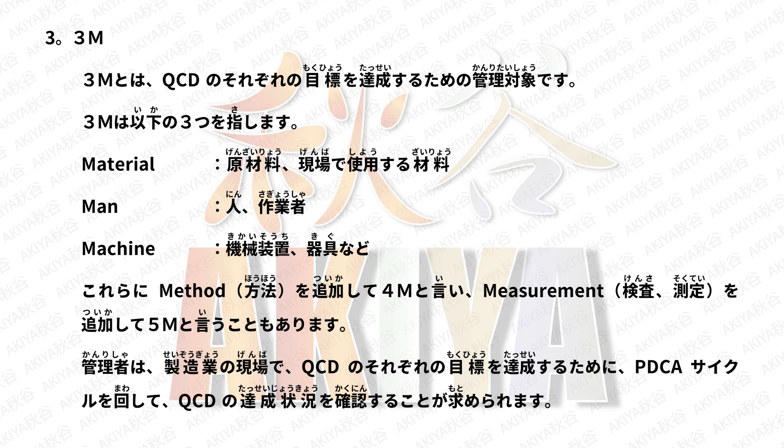3Mとは、QCDのそれぞれの目標を達成するための管理対象です。3Mは以下の3つを指します。Material（原材料）: 現場で使用する材料。Man（人）: 作業者。Machine（機械）: 装置・器具など。